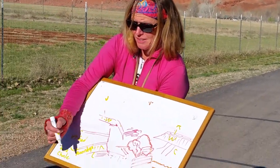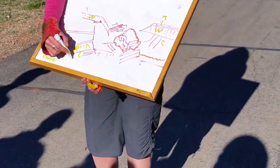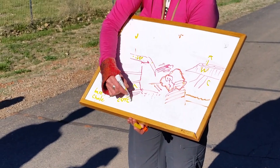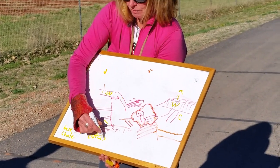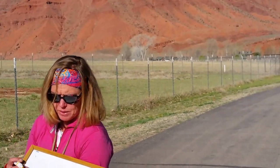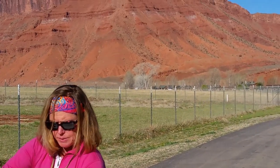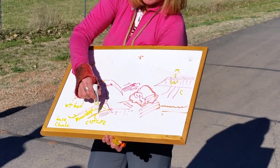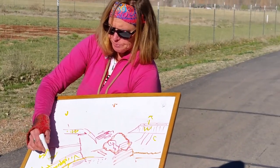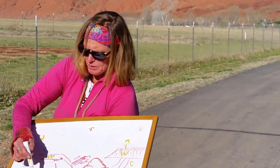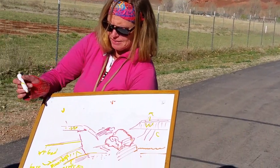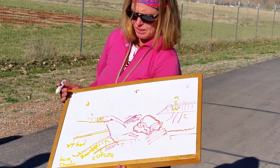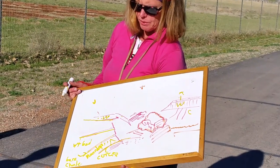And then these red beds down here — that's your Cutler. Notice the Cutler kind of comes up like that. That one's dipping. These are dipping, but less steeply. And then this comes and chops off across the top.